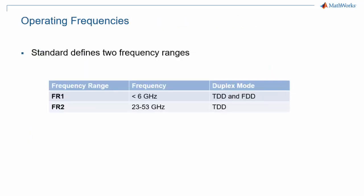The standard distinguishes between two different ranges for carrier frequencies, calling them Frequency Range 1 and 2, or FR1 and FR2. Those two ranges correspond to very different propagation conditions, and some physical layer settings only apply to one of those modes. This is the case for subcarrier spacing, as we will see in another episode of this series.